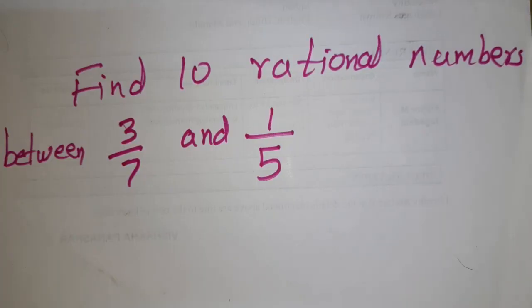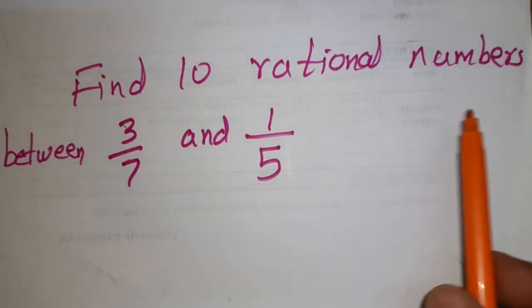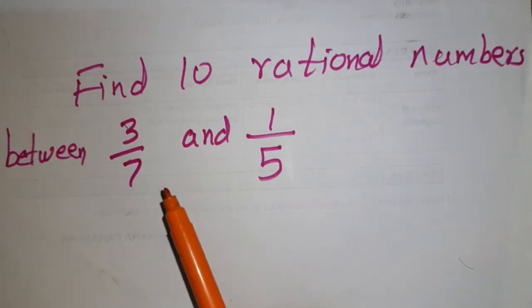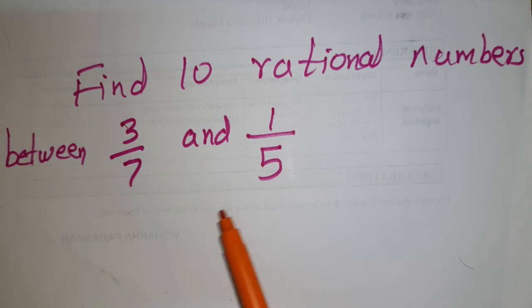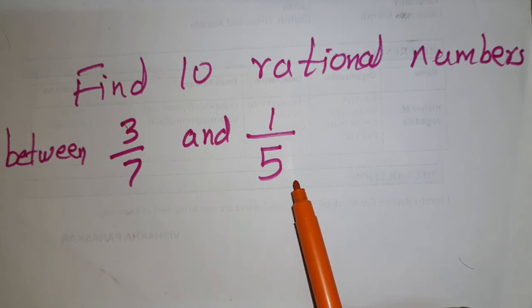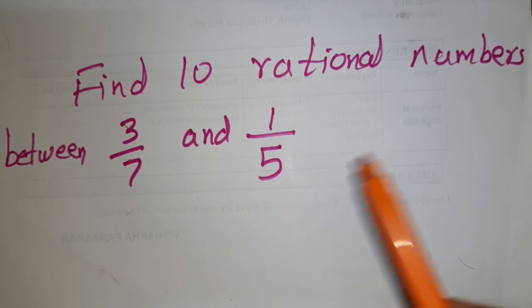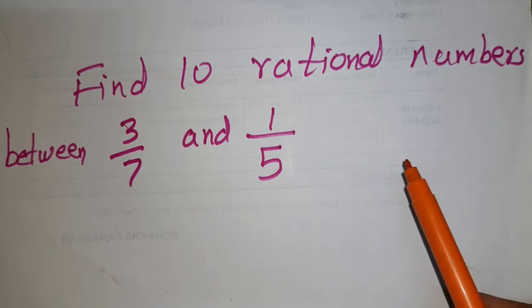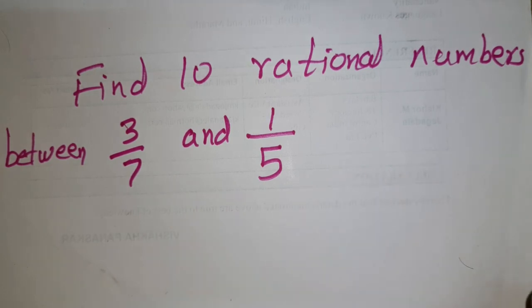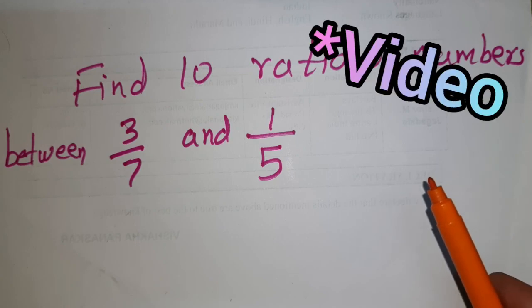Here is a challenge for you: find 10 rational numbers between 3 by 7 and 1 by 5. The one who posts the answer in the comment box first will be appreciated in the next video.